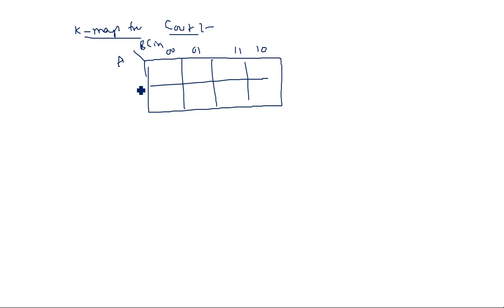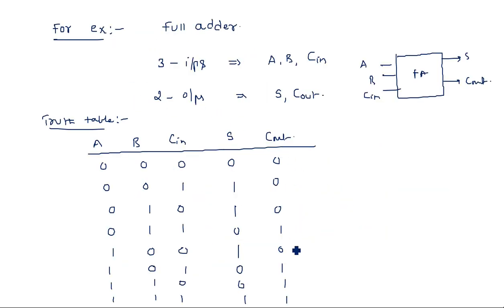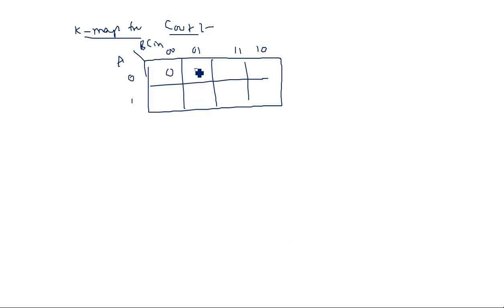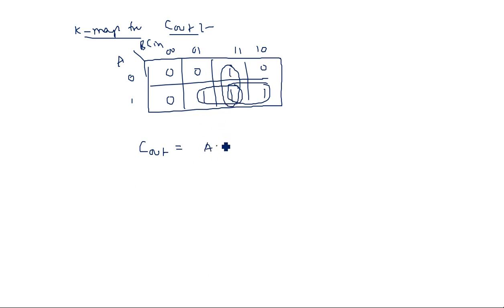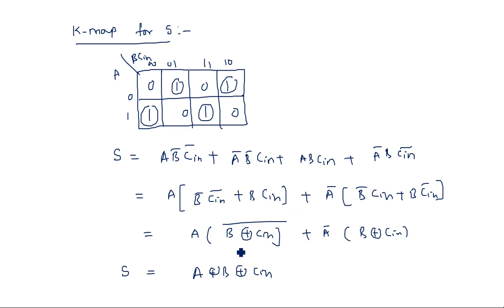For the K-map of Carry_out, grouping the ones from the truth table gives: C_out = A·C_in + B·C_in + A·B. For the implementation of carry we need three AND gates and one OR gate, and for sum we need only one three-input XOR gate.